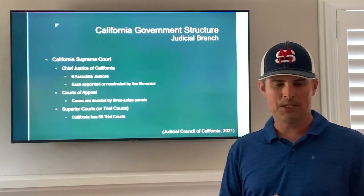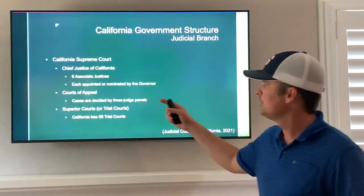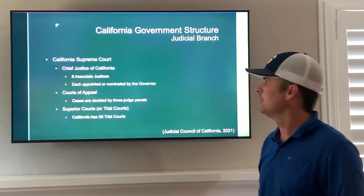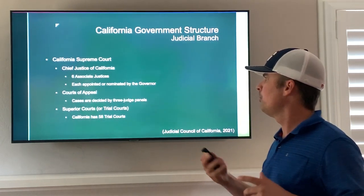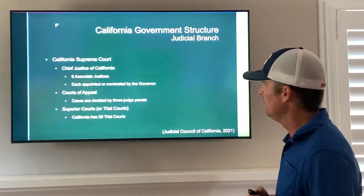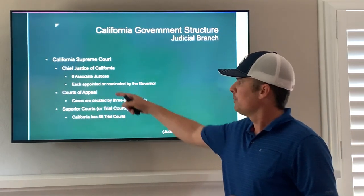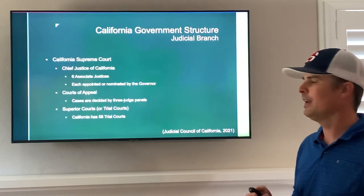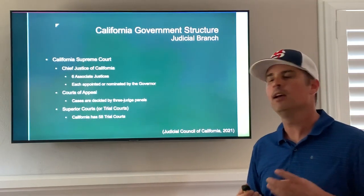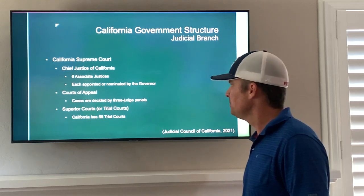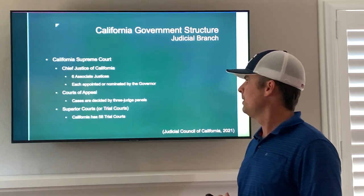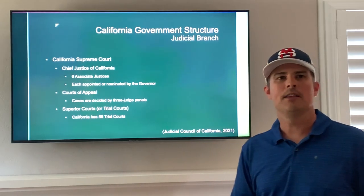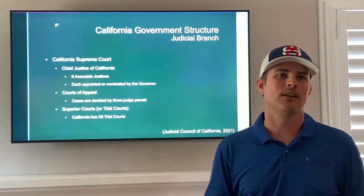The judicial branch includes the chief justice of California and six associate justices, each appointed or nominated by the governor. We have courts of appeal, where cases are decided by three-judge panels. And lower down, we have the superior courts or trial courts — California has 58 trial courts.